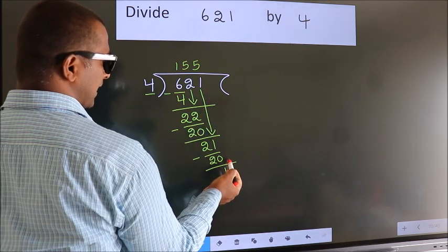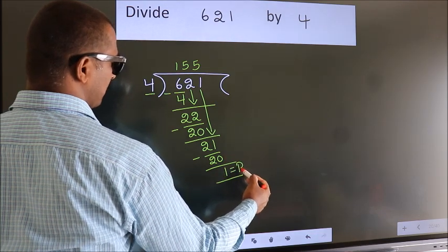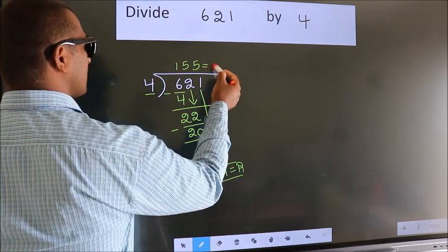No more numbers to bring down, so we stop here. This is our remainder. This is our quotient.